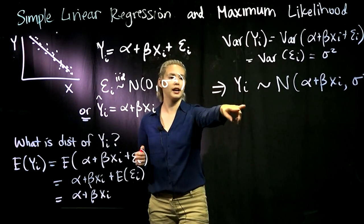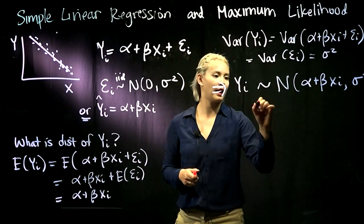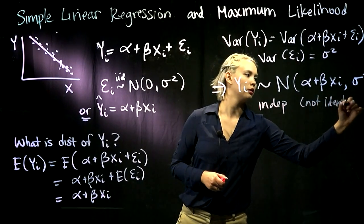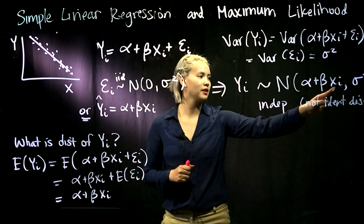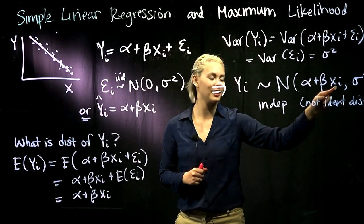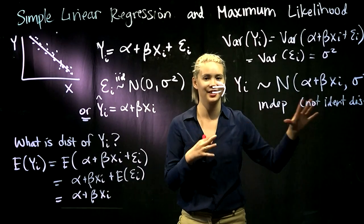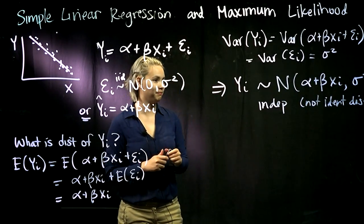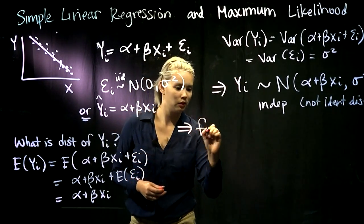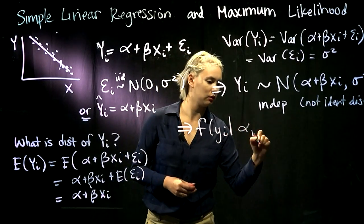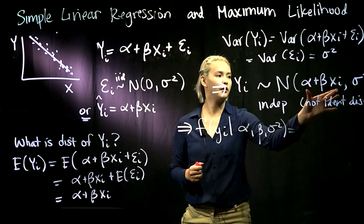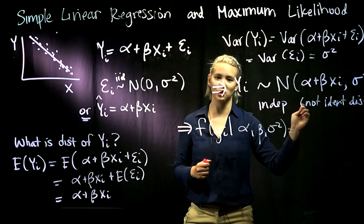For each of these Y_i's, here is its distribution. These Y_i's are independent, but they are not identically distributed, because each observation has its own X_i. Plugging in a different X_i for each Y_i gives a different mean, and therefore a different distribution. So we've got the distributions of the Y_i's, and we can write down the PDF — the PDF of a normal distribution with mean alpha plus beta X_i and variance sigma squared.